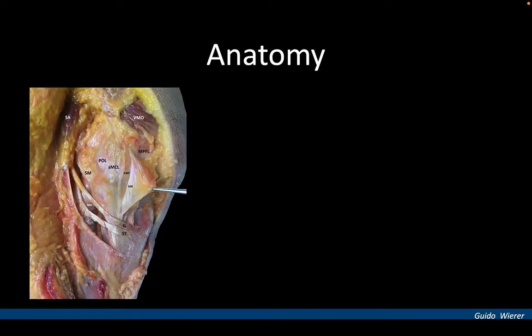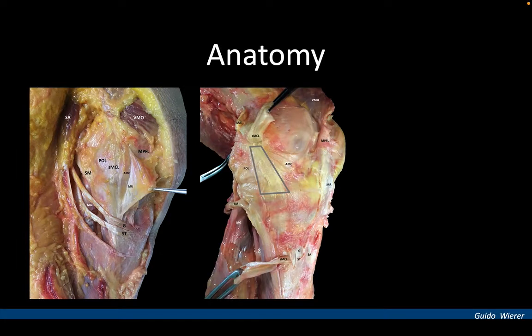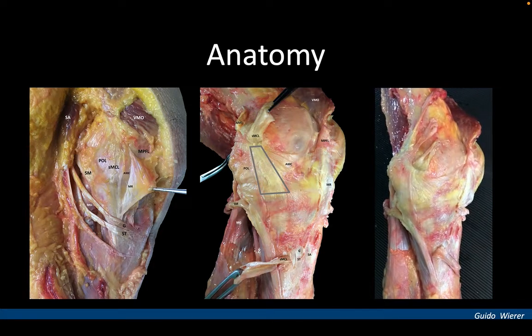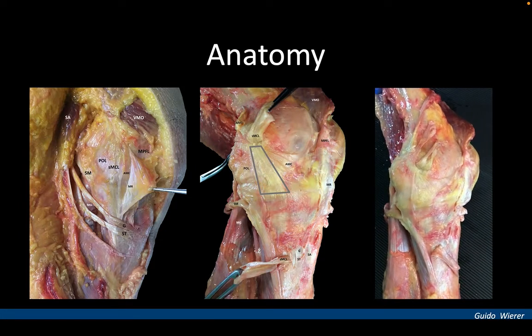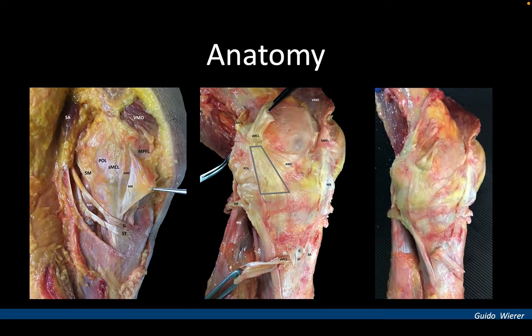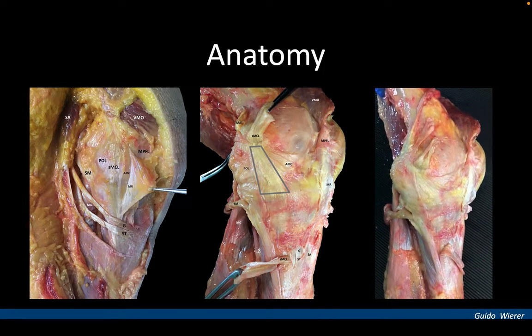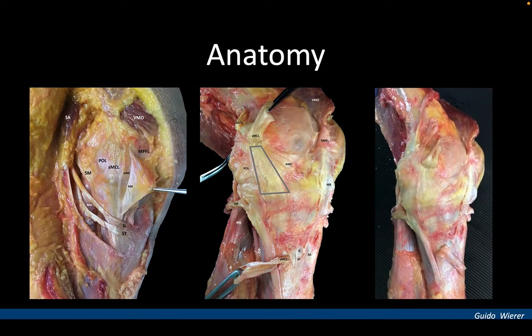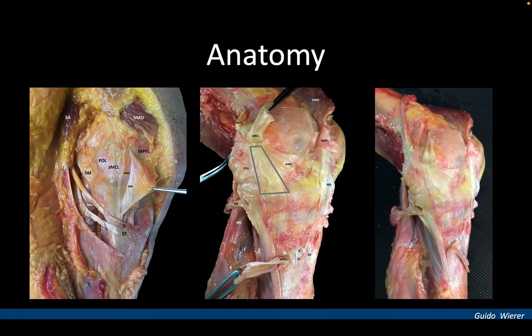Anatomy on the medial side of the knee is complex. The main structures of the medial collateral ligament include the superficial MCL, the posterior oblique ligament, and the deep MCL, which can be seen after dissecting the superficial MCL. The video on the right shows the different strain behaviours of the deep medial layer during tibial rotation from 0 to 120 degrees of knee flexion.